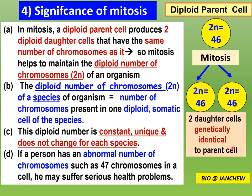A diploid parent cell for humans where 2N equals 46 produces daughter cells where 2N also equals 46. This must hold true through all cell divisions in the organism's body, so all cells produced by mitosis should be genetically alike or identical.